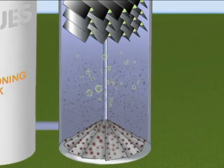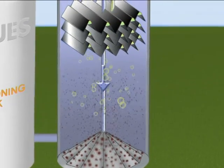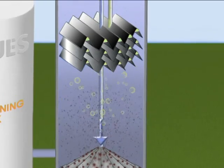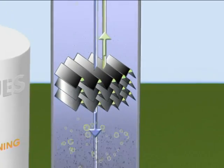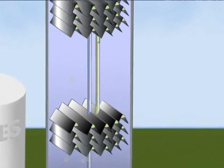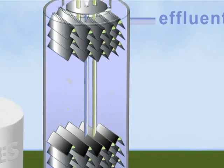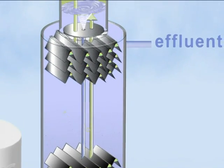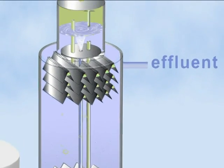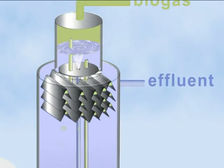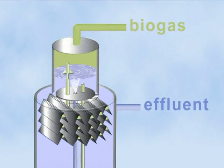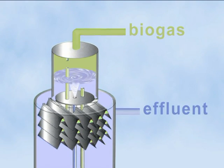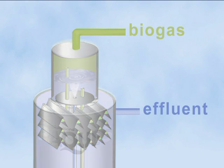If necessary, the effluent is further purified in the upper part of the reactor. This self-regulation within the Biopac IC offers particular advantages as to process stability. Operating certainty is therefore higher while the operating costs are reduced.